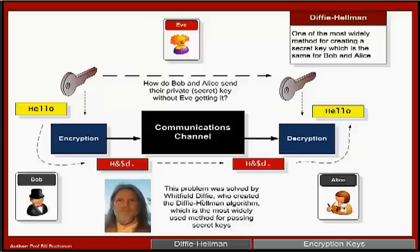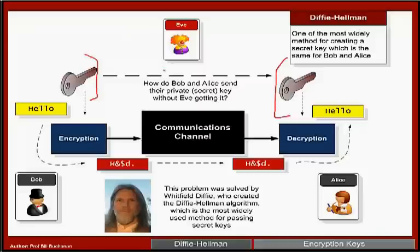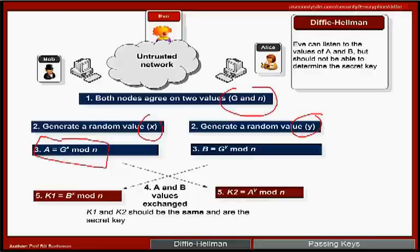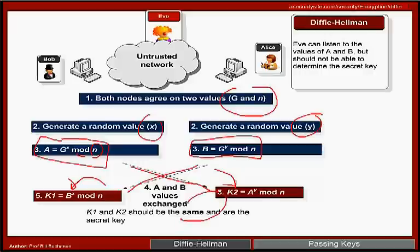This problem was solved by Whitfield Diffie, who created the Diffie-Hellman method. Bob and Alice can communicate openly and both end up with a shared secret key. They can create a new key every single time they communicate — for example, when creating a VPN tunnel to a corporate network. The algorithm works with public values G and N: Bob generates a random value x, computes G^x mod N to get A; Alice does the same with y to get B. They exchange A and B, then each computes the shared secret — both arrive at the same value.